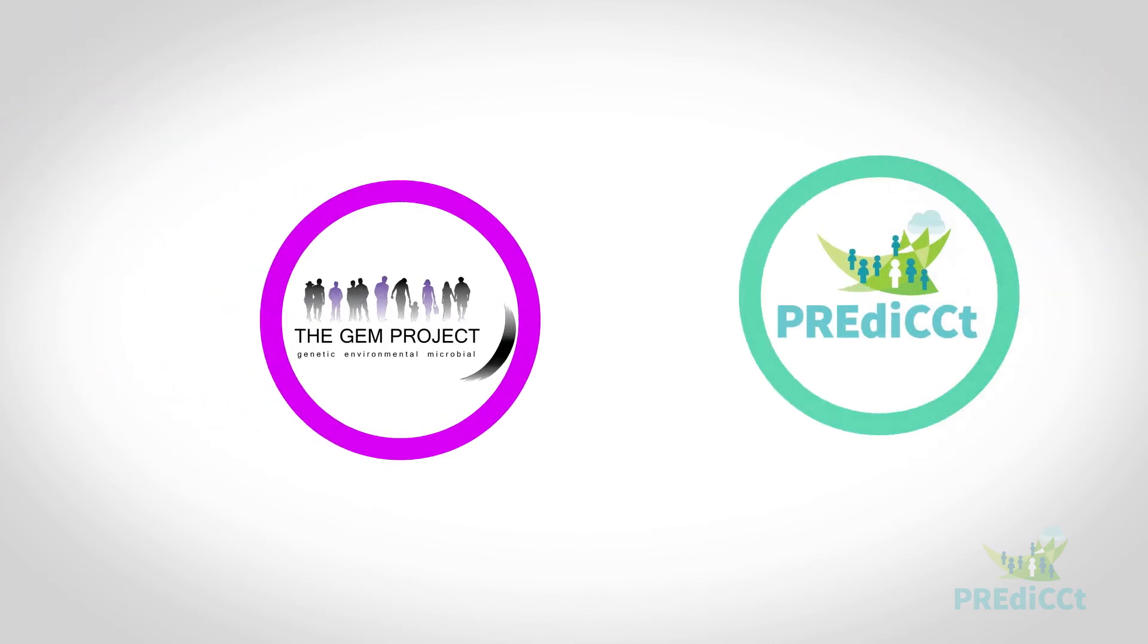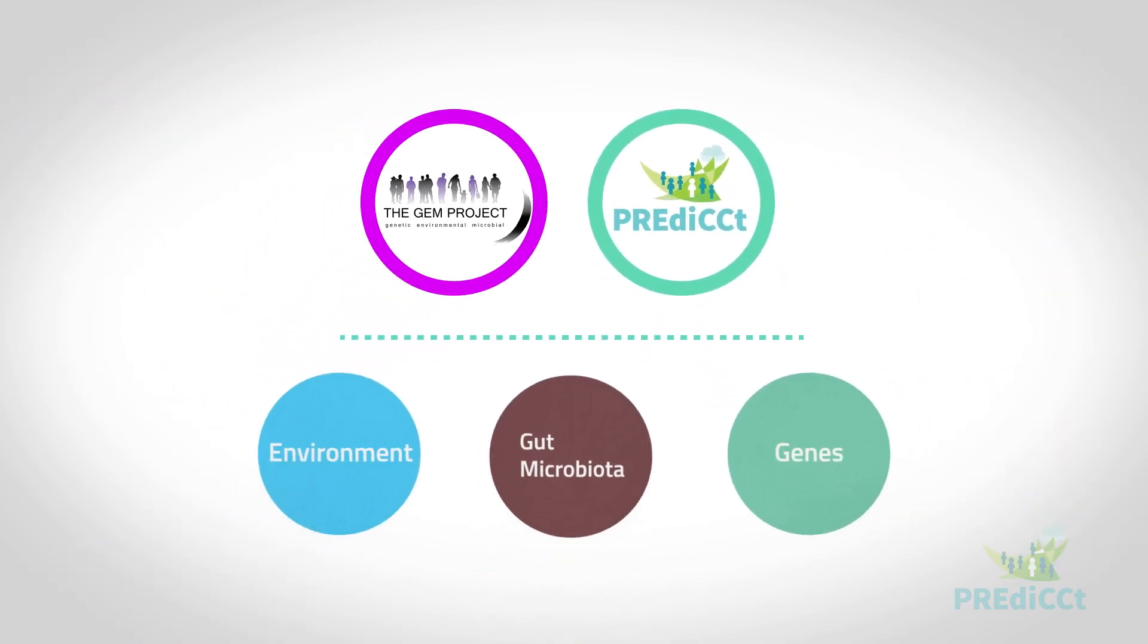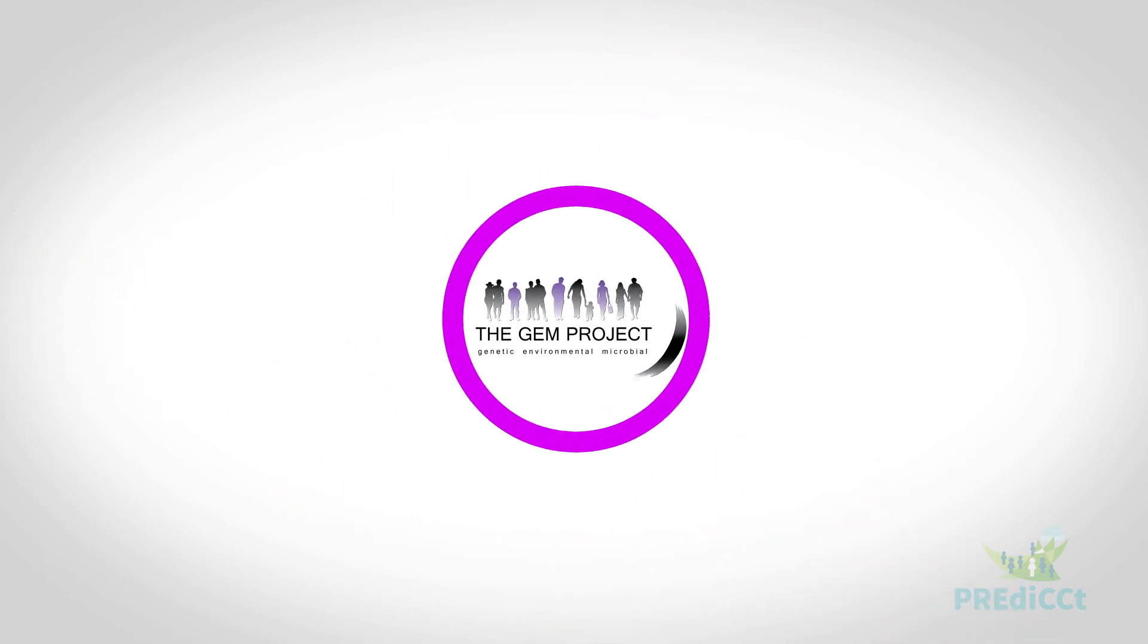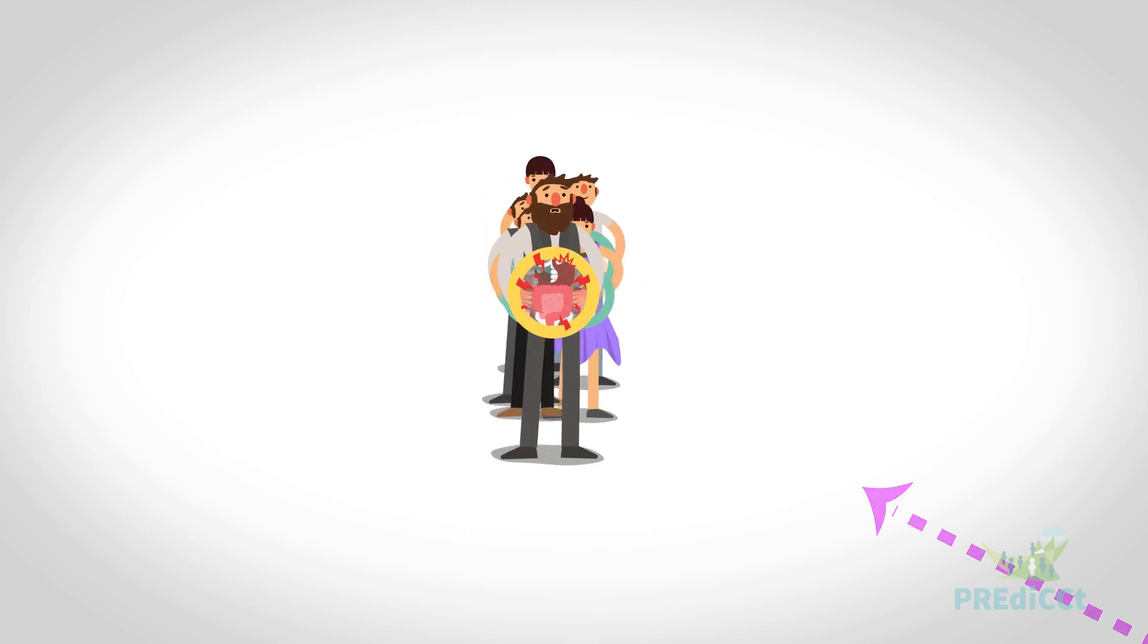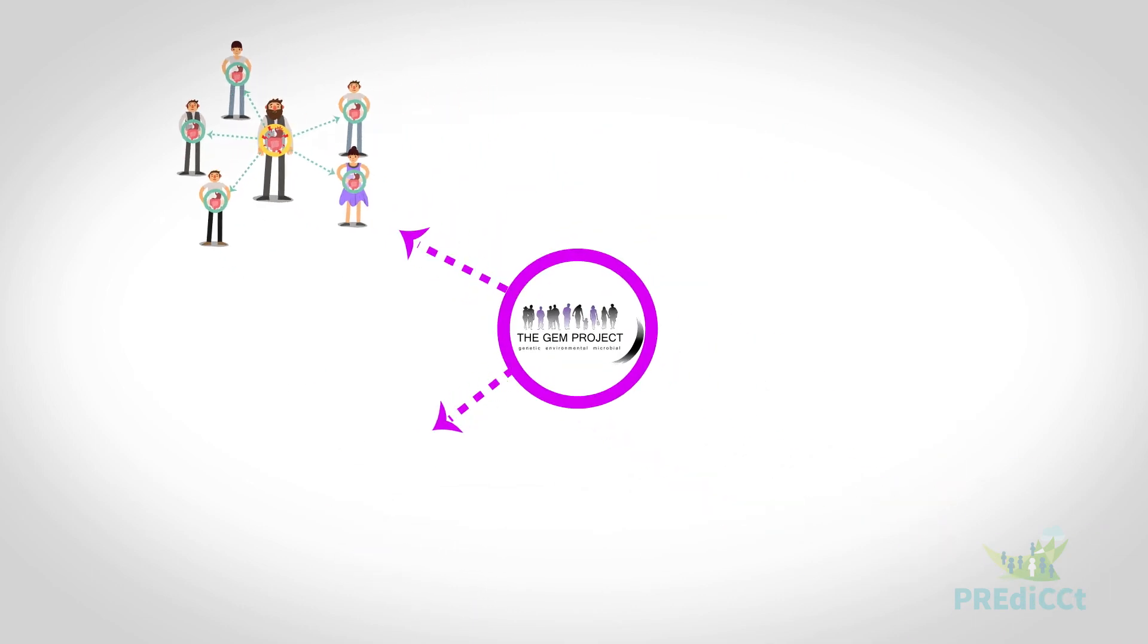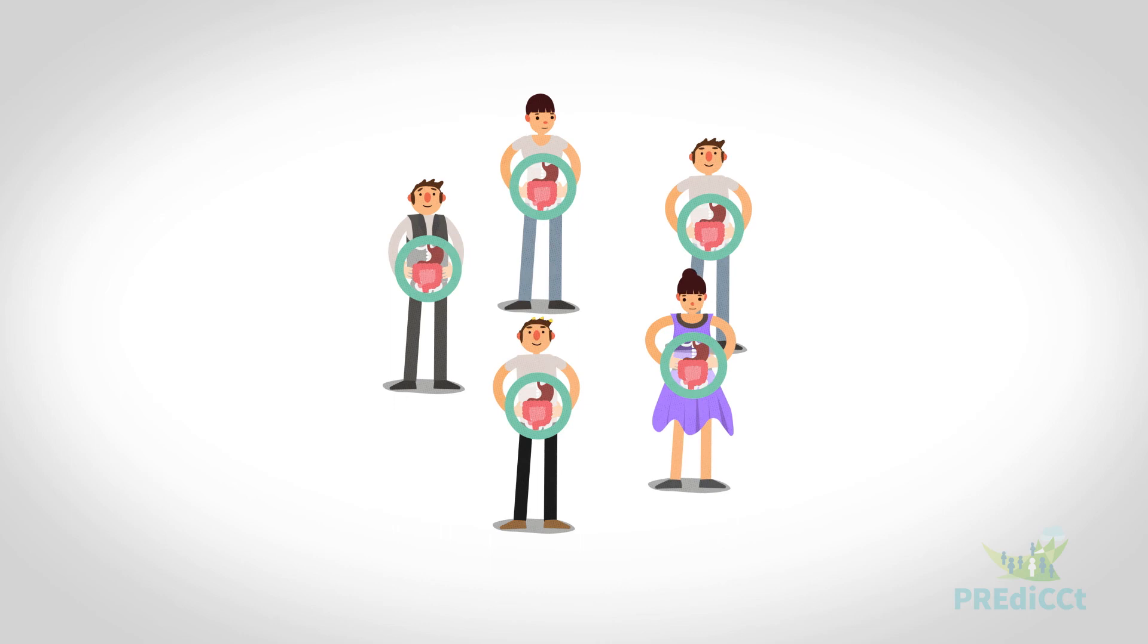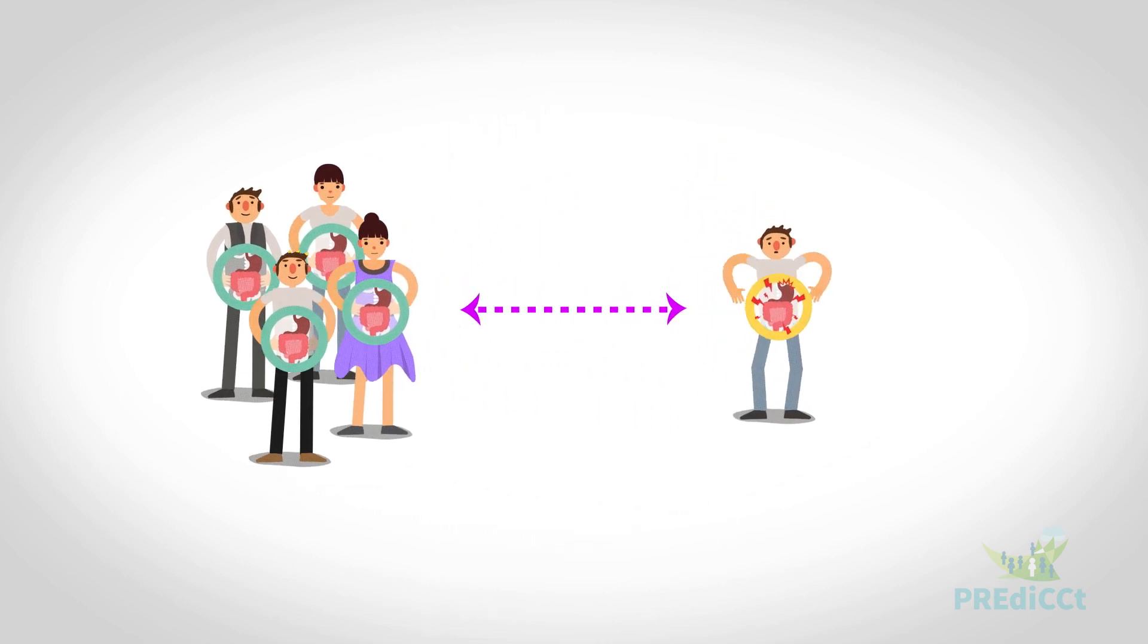Two major studies are currently trying to dissect the role of genetic, environmental, and gut microbial factors in IBD. The GEM study is recruiting 5,000 healthy first-degree relatives of patients with Crohn's disease and taking biological samples and lifestyle information while they are well. Individuals are then followed up over time, and the minority that develop Crohn's disease will be compared with those that do not.